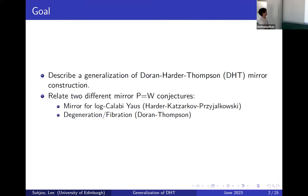I'm going to describe a generalization of the Thompson mirror construction, which was also mentioned in the talk yesterday. I want to talk about two different mirror P equals W conjectures, which differ from the original three-dimensional P equals W conjecture in the context of homological algebra theory.